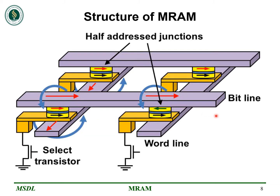This is the full structure of MRAM. You can see there are transistors, a word line, a bit line, and the magnetic tunnel junction device seen in the previous slides, with different orientations.